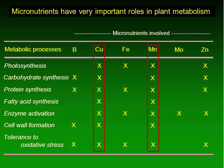Just because these nutrients are needed in small quantities doesn't mean they're not important. Micronutrients play a role in very essential metabolic plant processes, including photosynthesis, carbohydrate synthesis, protein synthesis, fatty acid synthesis, enzyme activation, cell wall formation, and overall tolerance to stress. If any micronutrient is deficient, the plant will have a difficult time maintaining productivity, health, and quality. Some micronutrients, like copper and manganese, play an important role in almost every metabolic process, including enzyme activation and photosynthesis.